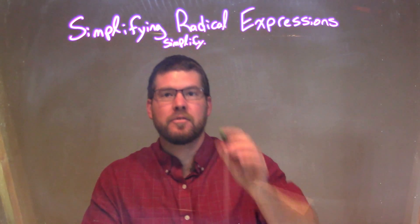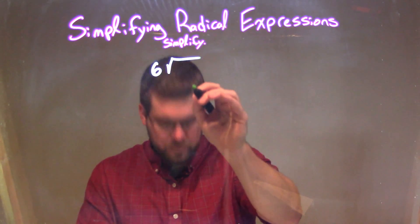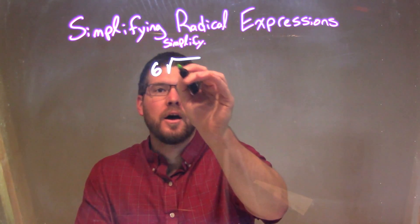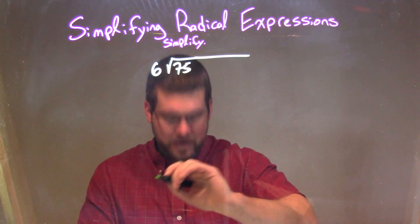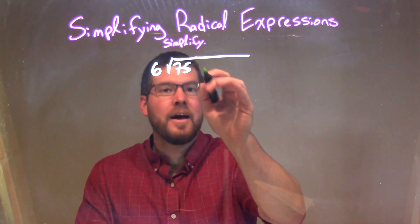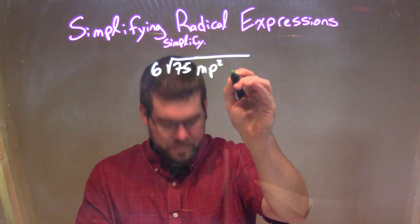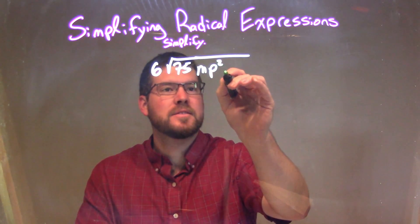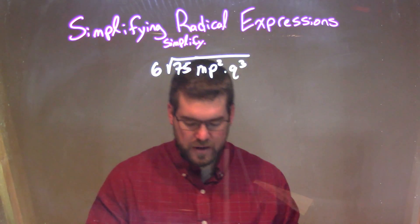So if I was given this expression: 6 times the square root of 75 — and this is bigger — m squared times q to the third.